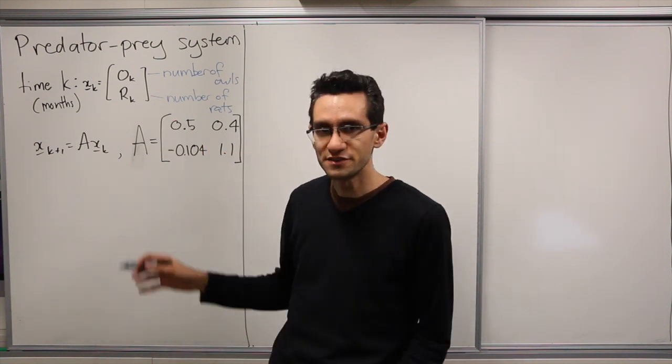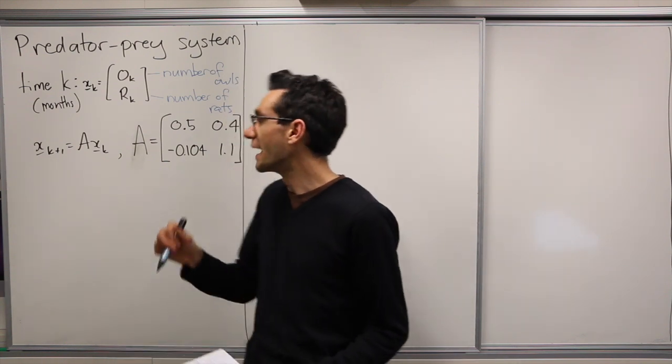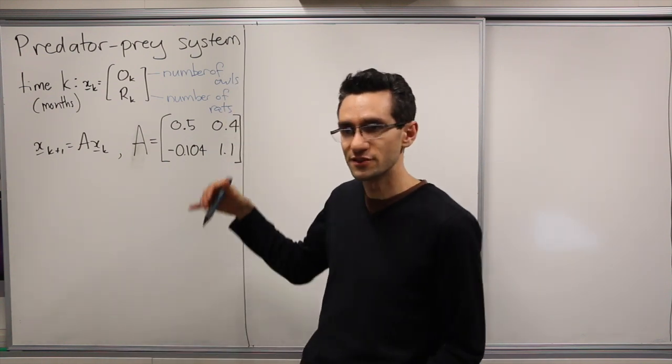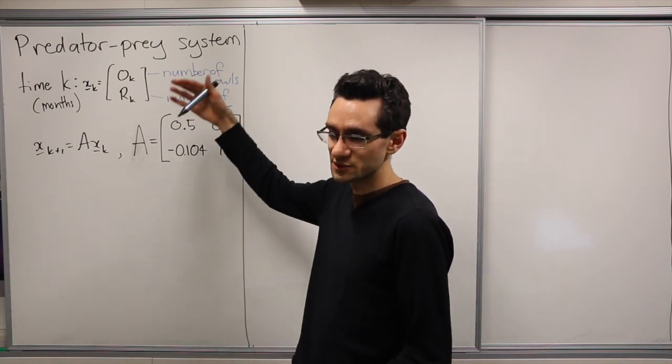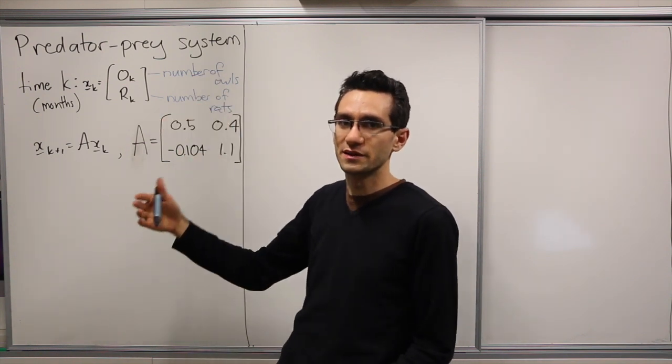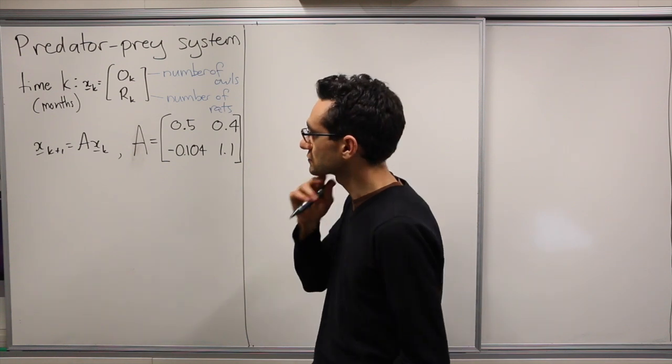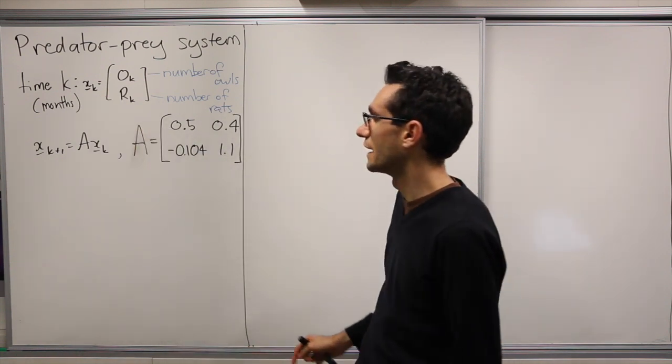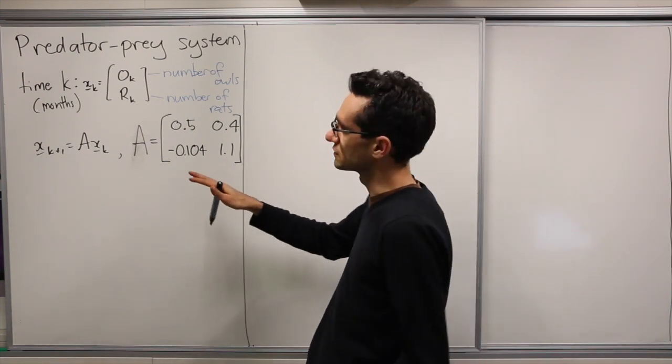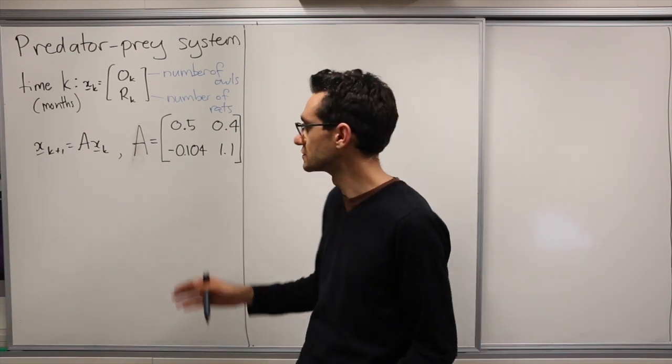So here we've got a predator-prey system detailed in the notes, dealing with owls and rats. The owls feed on the rats, and the rats are depleted by the owls but otherwise replenish at a reproduction rate. Our time here is measured in months, k is the time parameter, and the matrix which controls the dynamical system is detailed in the notes for the particular reasons.